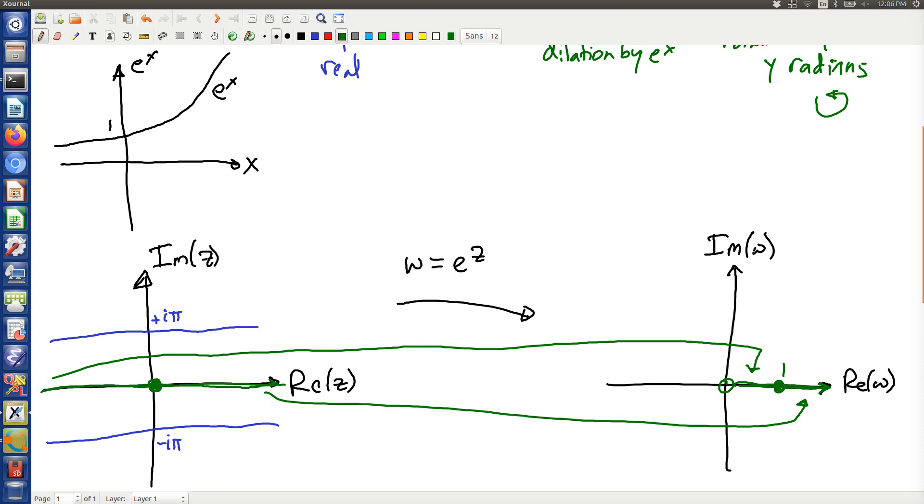Now because this diagram will get a bit cluttered, I'm going to erase the arrows so that I can have some more room. Now there are some other lines around here. What about the imaginary axis? Where does that go? Well here's the imaginary axis. I'm only going to look at the portion between minus i pi to plus i pi. Where does that get mapped?